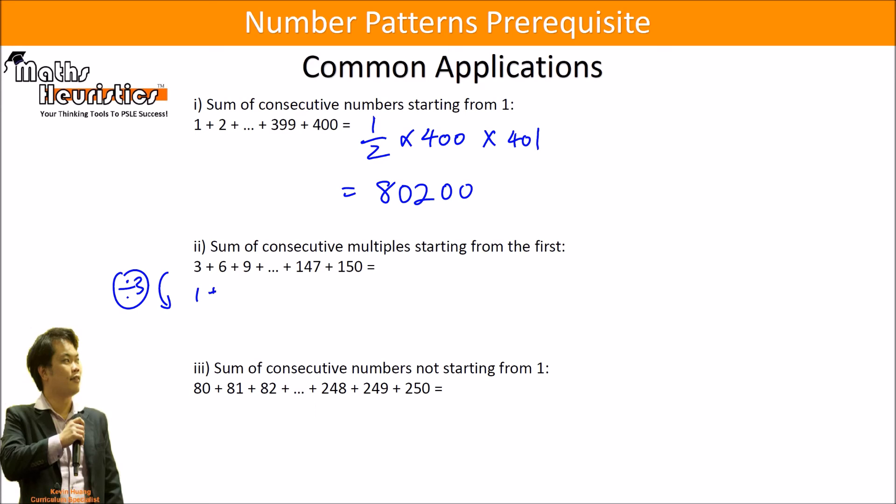And everything becomes 1 plus 2 plus 3 plus dot dot plus 147 divided by 3, which is 49, plus 50. So I'll find this out first. This is half times 50 times 51. So that will give you 1275.